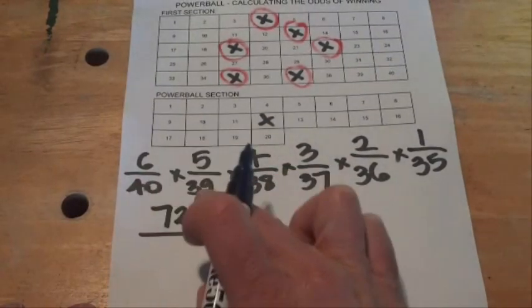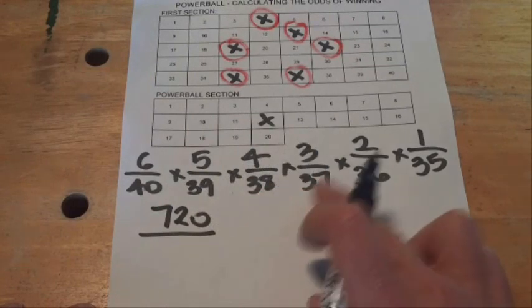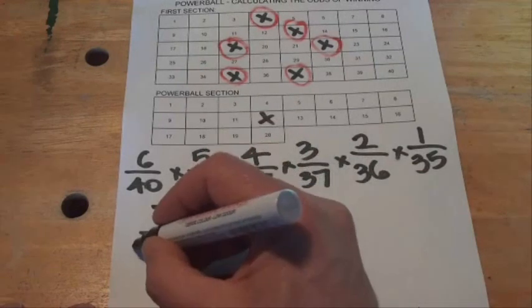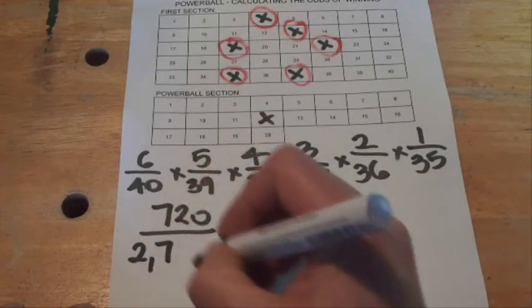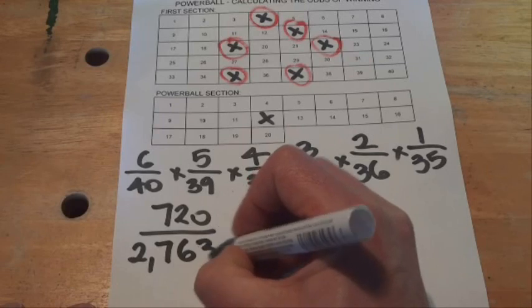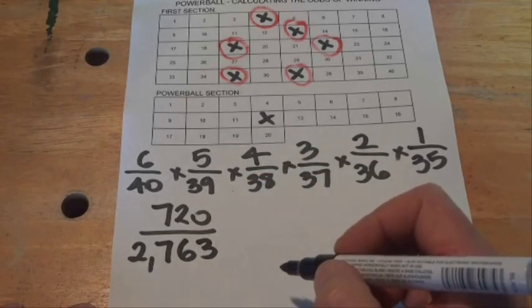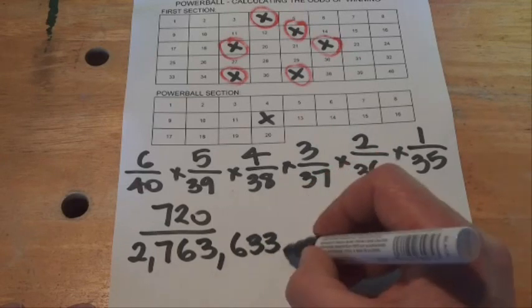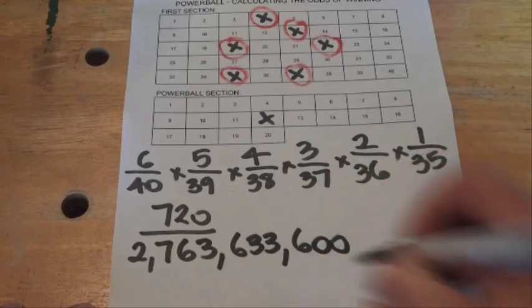And then 40 times 39 times 38 times 37 times 36 times 35 gives us a number of 2.7 billion: 2,763,633,600.